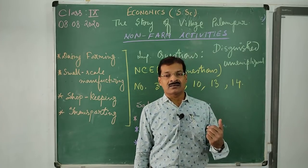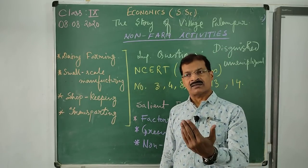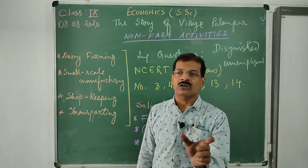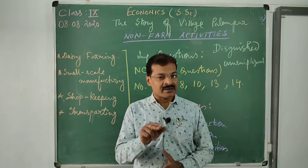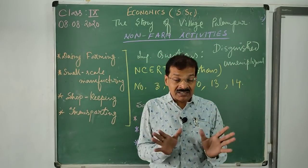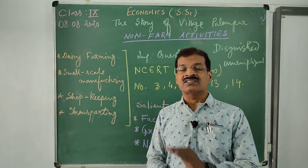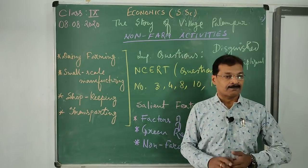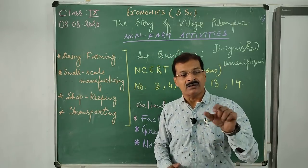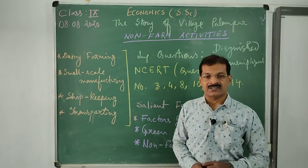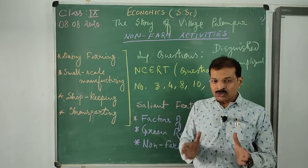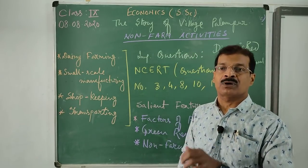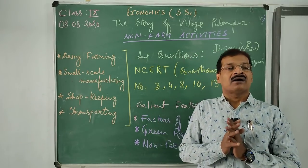The question automatically arises: how are three members producing the same level of output - five quintals of yield? Actually, those two members were disguisedly employed. They were apparently seeming to be employed but had not increased the productivity in the previous year. In economics, we always consider productivity - not total production, but per unit production per particular acre of land. The per unit production was not increased because of the involvement of those two members. This is called disguised unemployment.